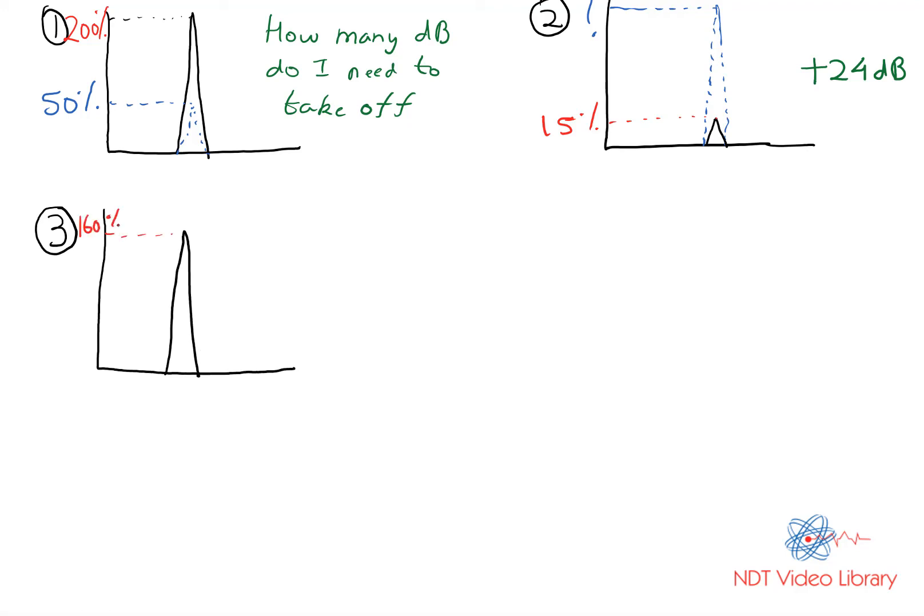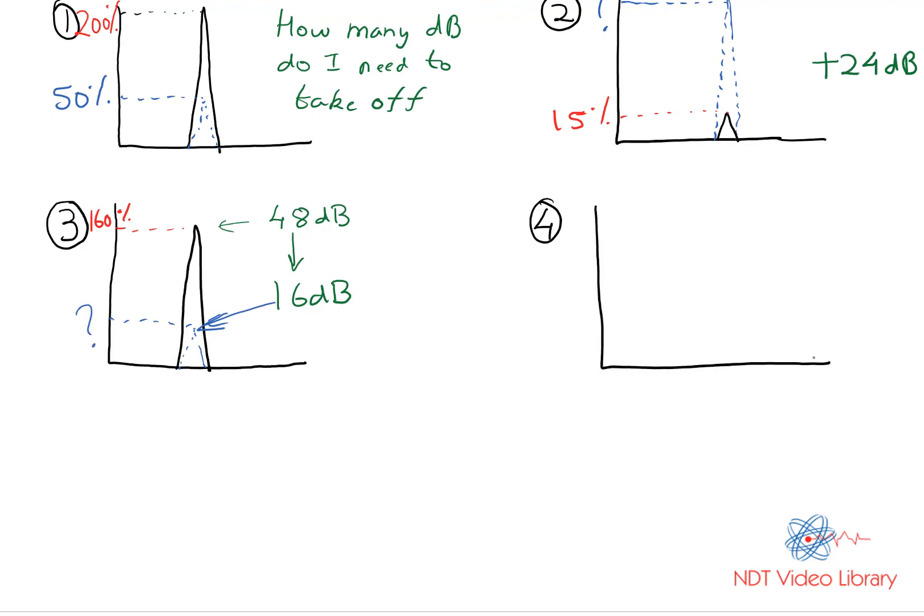Third problem is an A-scan amplitude showing you 160% full screen height. The decibels at this height is 48 decibels. I turn those 48 down to 16, that means I lost 32 decibels. What would be the final amplitude?